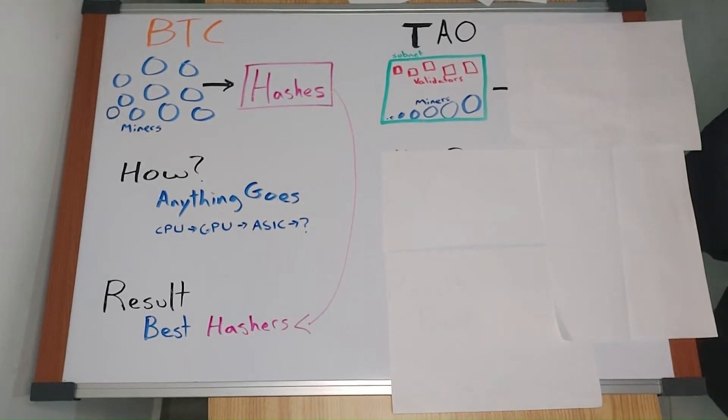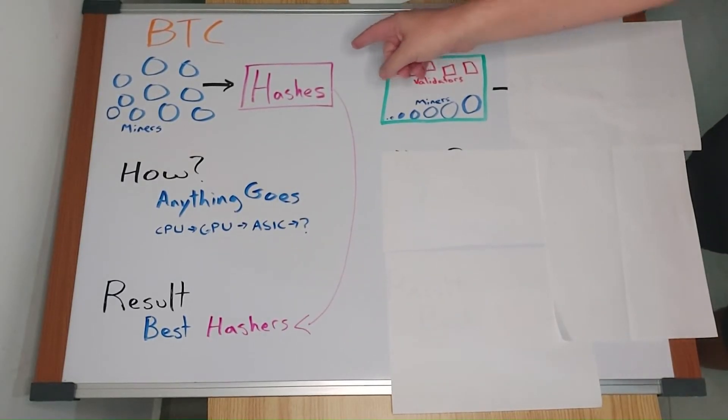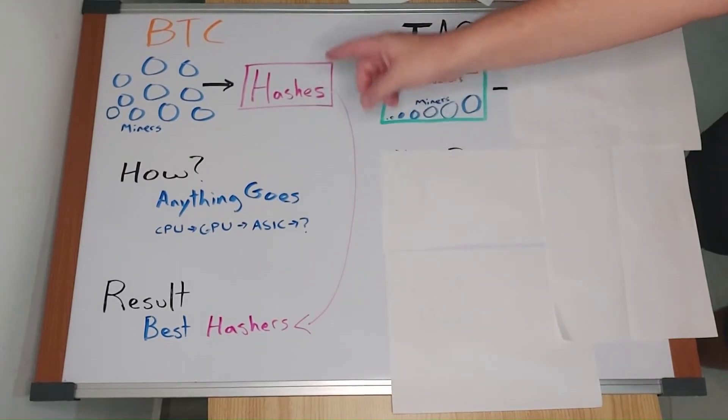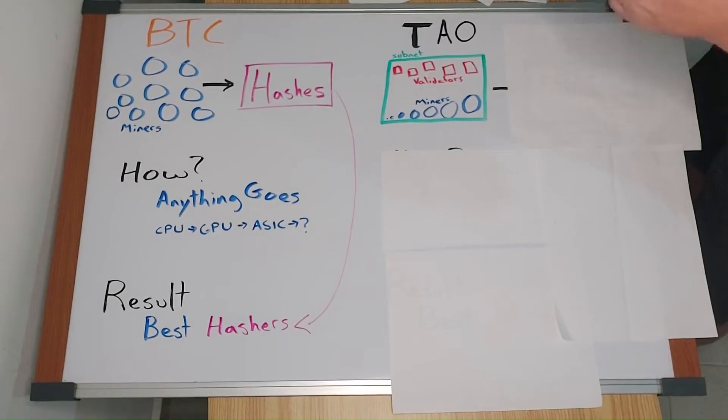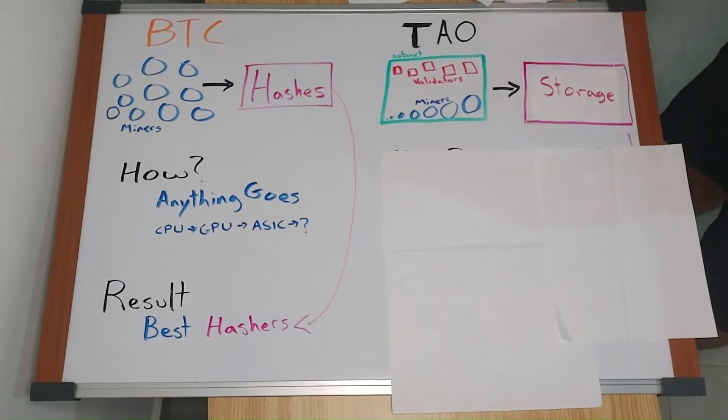Let's take a look at the storage subnet. Remember how we observed that Bitcoin produced an incentive to make powerful machines that are very good at guessing hashes? The storage subnet is doing that, but for storage.